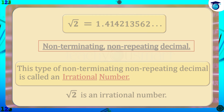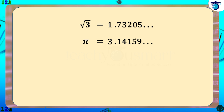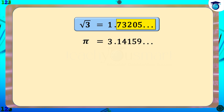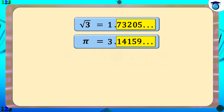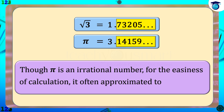Some other irrational numbers are: root 3 equals 1.73205..., and pi equals 3.14159.... For root 3, the digits after the decimal point are non-terminating and non-repeating. For pi as well, the digits after the decimal point are non-terminating and non-repeating. Though pi is an irrational number, for the easiness of calculation it is often approximated to 22 by 7 or 3.14.